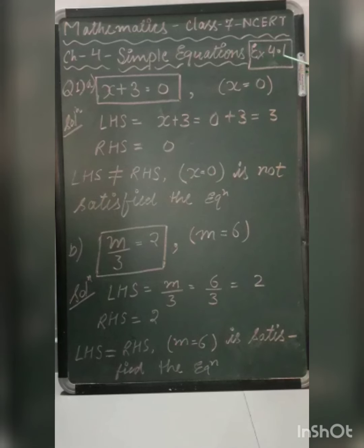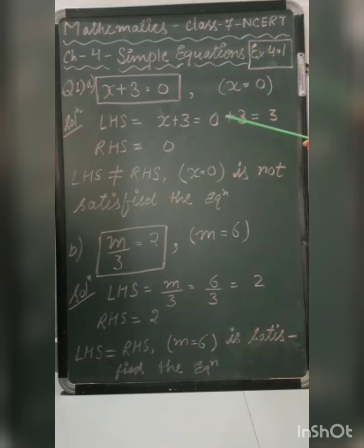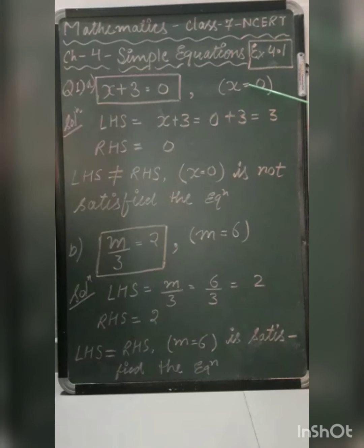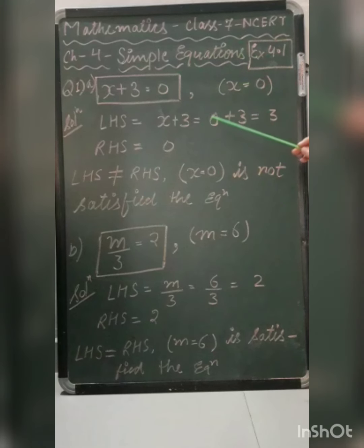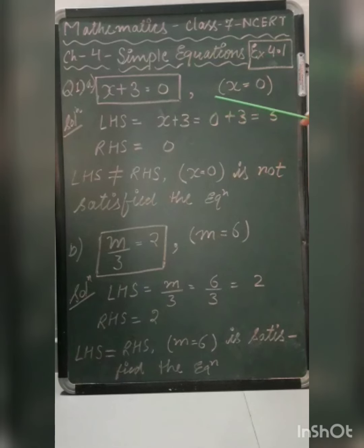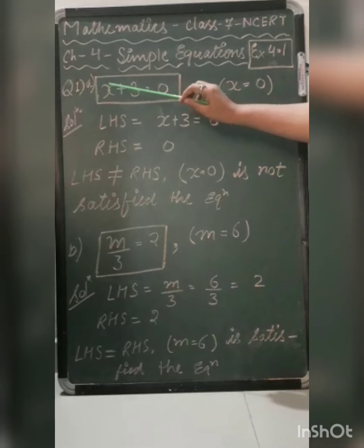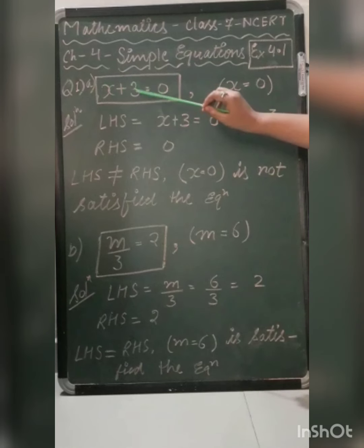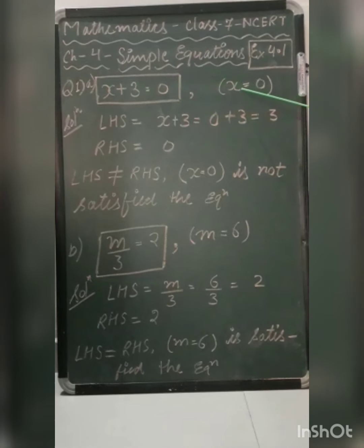Now come to exercise 4.1, question number 1. In this question, you have to check whether the values given in the bracket satisfy the equation or not. Part (a): the equation is x plus 3 equal to 0, and the value of x given is 0.